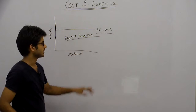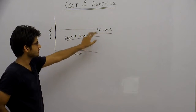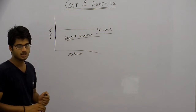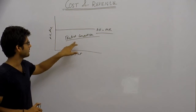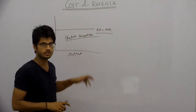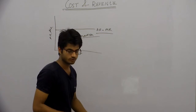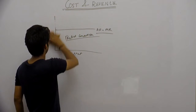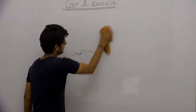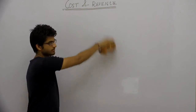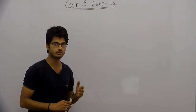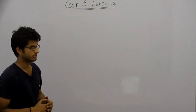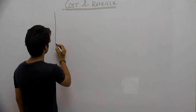Both marginal revenue and average revenue are constant and the same at all units of output in perfect competition. But in other market forms — monopolistic competition, oligopoly, or monopoly — the average revenue and marginal revenue curves will behave differently. We will now draw a diagram showing average revenue, marginal revenue, and total revenue to develop their relationships in a non-perfect competition market.